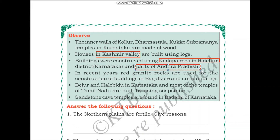In parts of Karnataka and Andhra Pradesh, Kadapa rock was available so people made use of it. In recent years, red granite rocks are used for construction of buildings in Bagalkot and surroundings, Belur, and Halebid in Karnataka. Most temples in Tamil Nadu have been built using soapstone, and sandstone cave temples are found in Badami, Karnataka. These are different materials highly influenced by the availability of natural resources.